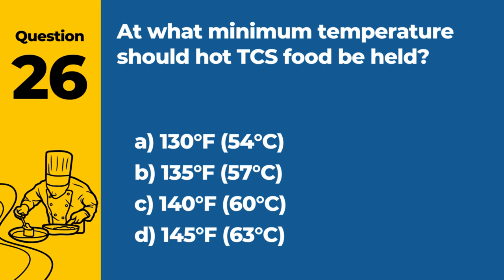Question 46: How should a manager address an employee's failure to adhere to food safety practices? A. Ignore it as long as no one gets sick. B. Provide additional training and monitor the employee's practices. C. Immediately terminate the employee. D. Give a verbal warning and then ignore. Answer: B. Provide additional training and monitor the employee's practices. A manager should address an employee's failure to adhere to food safety practices by providing additional training and closely monitoring the employee to ensure compliance.